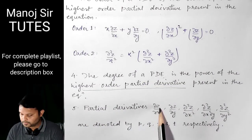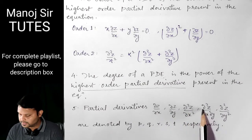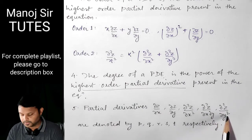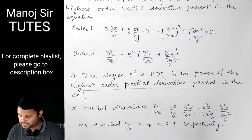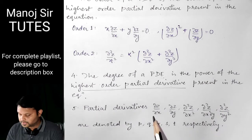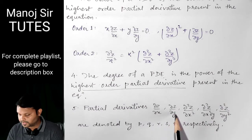The last point: partial derivatives DEL Z upon DEL X, DEL Z upon DEL Y, DEL squared Z upon DEL X squared, DEL squared Z upon DEL X DEL Y, and DEL squared Z upon DEL Y squared can be denoted respectively as P, Q, R, S, T. It means if somebody writes P, Q, R, S, or T in a PDE, these represent those respective partial derivatives.